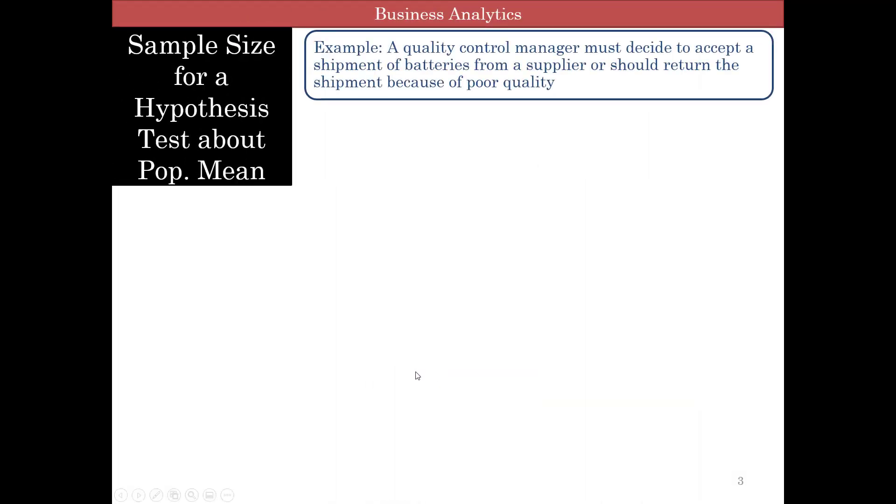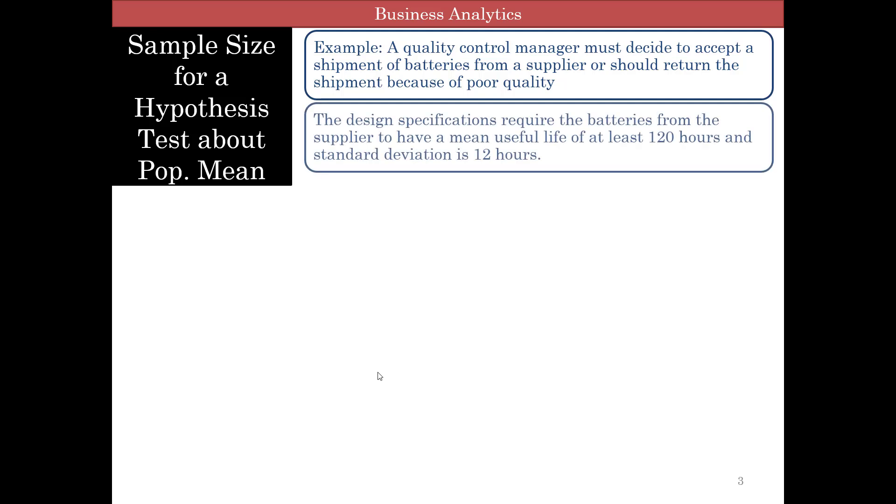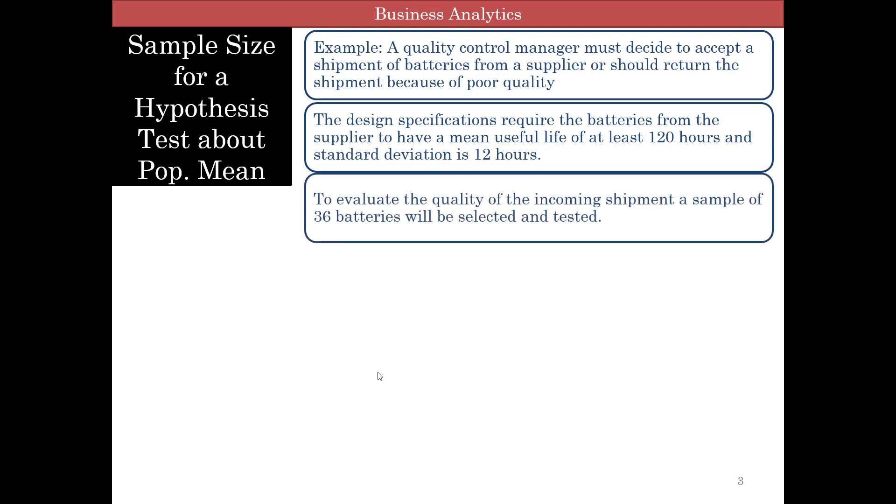Let's take the same example about a quality control manager who needs to decide whether to accept a shipment of batteries from a supplier or return the shipment because of poor quality. The design specifications require the batteries to have a mean useful life of at least 120 hours and a population standard deviation of 12 hours.